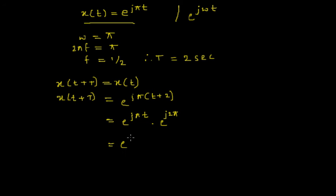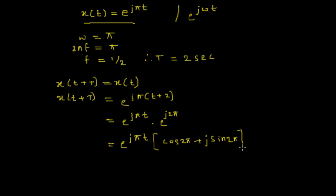Expanding, we get e to the power jπt multiplied by e to the power j2π. Using Euler's rule, we can expand e to the power j2π as cos(2π) plus j·sin(2π). We know that sin(2π) equals 0 and cos(2π) equals 1.